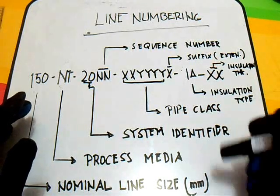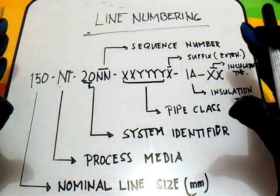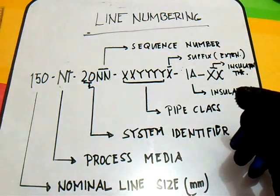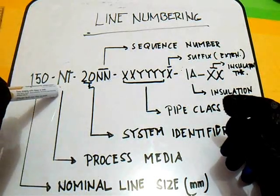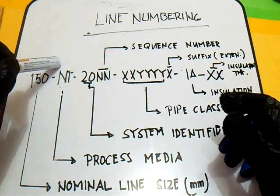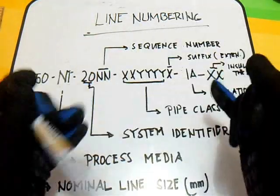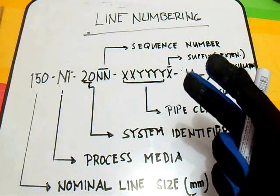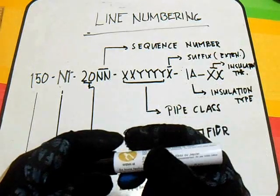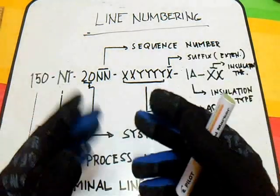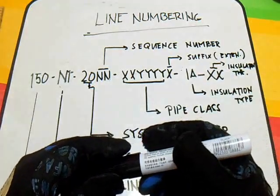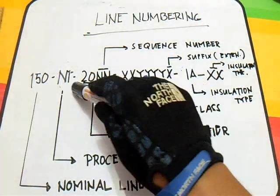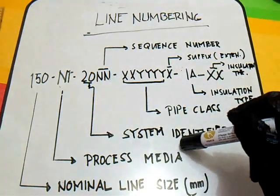Hi, welcome and thanks for watching and subscribing. This is the line number in the isometric drawing. So this 150 is a nominal line size, and this empty space is the process media — for example, nitrogen. We have different process media: AU utility air, AI instrument air, CO carbon dioxide, GL glycol, OL lube oil, PG process gas, or BL frail. So those are the different process media. Now what is this 20? This is the system identifier.